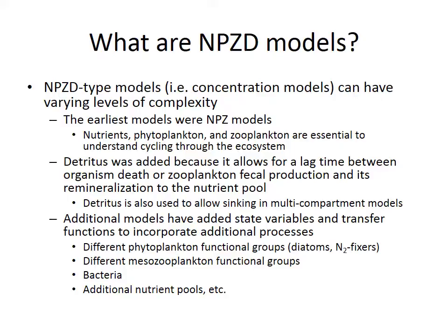The term NPZD model specifically refers to a model with state variables: nutrient, phytoplankton, zooplankton, and detritus. However, NPZD-like models are basically any models that model the ecosystem as these concentrations. The earliest models were just NPZ models — no detritus, just nutrients, phytoplankton, and zooplankton. Detritus was eventually added because it allows for a lag time between organism death or zooplankton fecal production and remineralization to the nutrient pool. Also, in a multidimensional model — say a 1D model with vertical structure or a 3D ocean model — detritus allows you to include sinking, so detritus can sink from the surface down into the deep ocean.